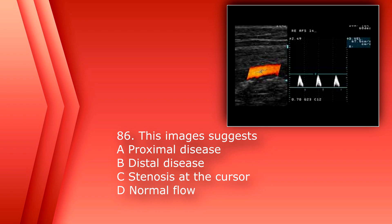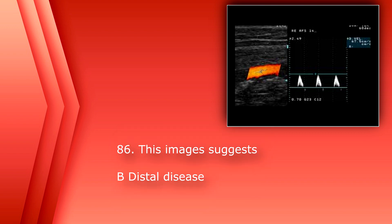Number 86: this image suggests A. Proximal disease. B. Distal disease. C. Stenosis at the cursor. Or D. Normal flow. This is an extremity artery — a femoral artery — which should be a triphasic waveform. This waveform is monophasic with slightly lower velocities, suggesting B. distal disease. If this was a post-stenotic waveform, there would be an increased acceleration time and lower peak systolic velocities, known as the tardus parvus waveform.